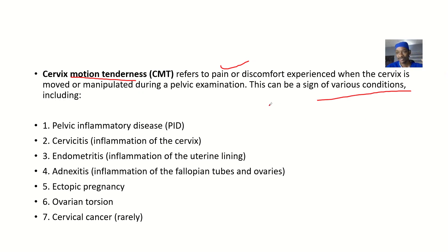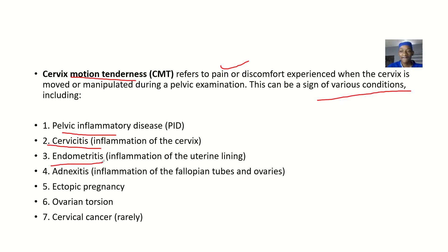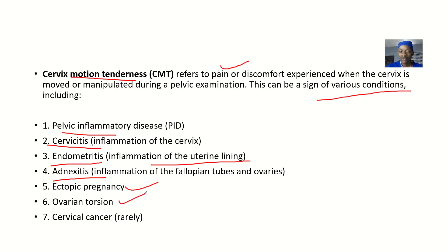It can be a sign of various conditions. If she experiences pain on motion of the cervix, it could mean there's pelvic inflammatory disease, cervicitis — that's inflammation of the cervix — endometritis, which is inflammation of the uterine lining, or adnexitis, which involves the fallopian tubes and ovaries. It could also indicate an ectopic pregnancy, ovarian torsion, or, though rare, cervical cancer.